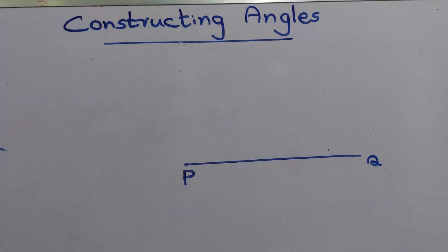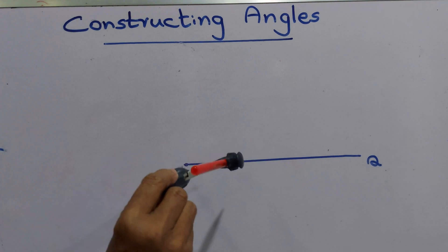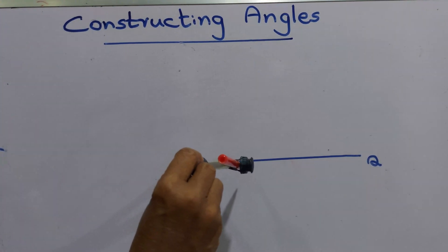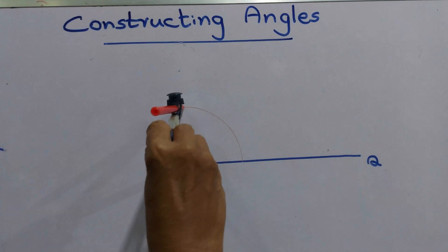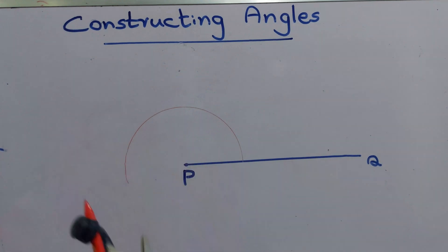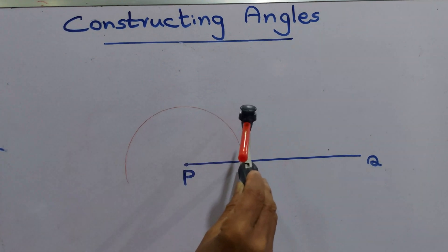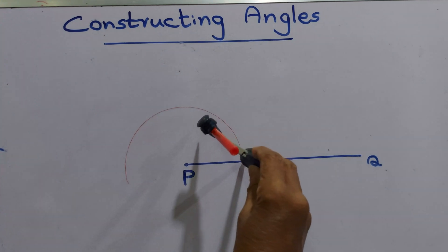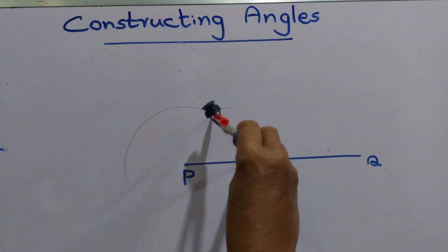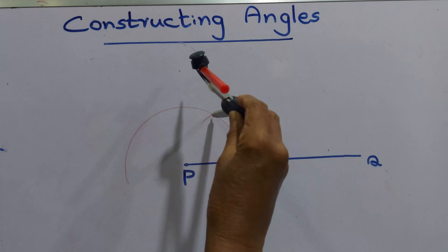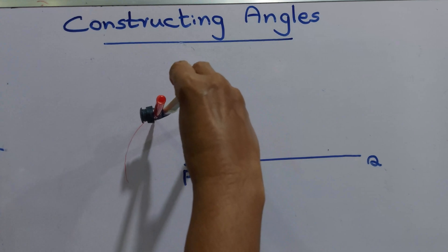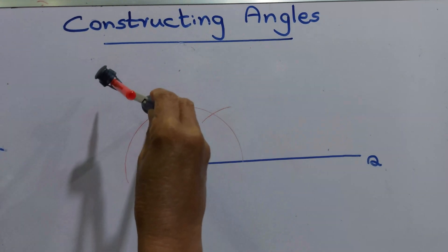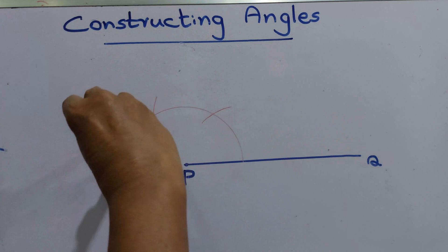Then using a compass, we are going to construct angles. Keep the point of the compass on point P, then draw an arc from P — like this. That's where the arc and the straight line meet. Keep the point there, then draw another mark here at the intersection. Then keep the point there and draw another mark.